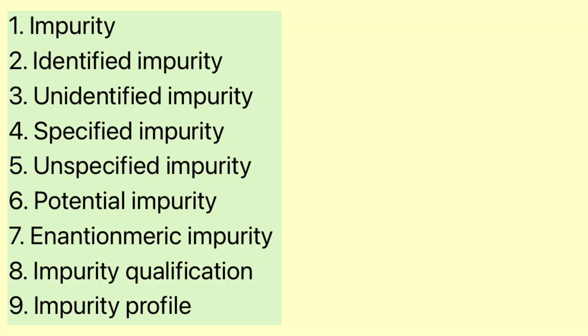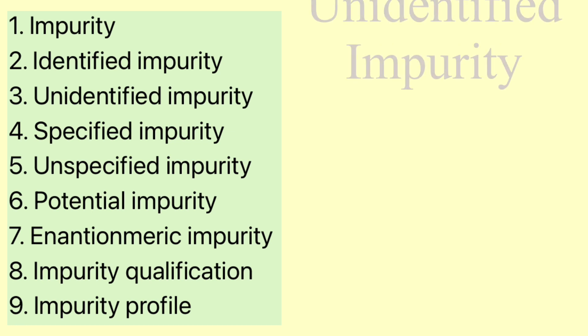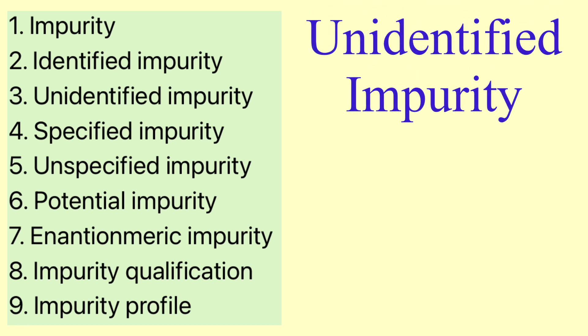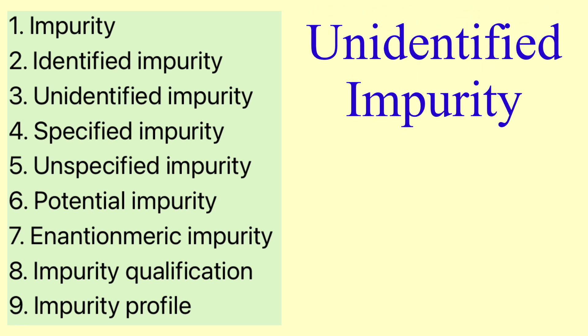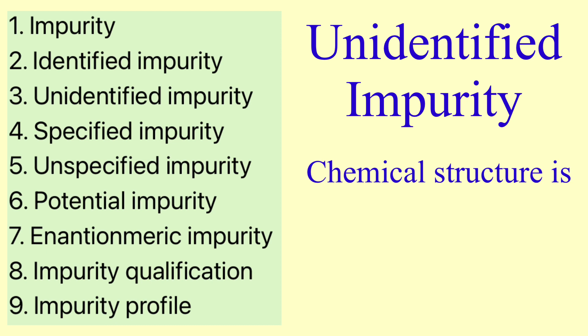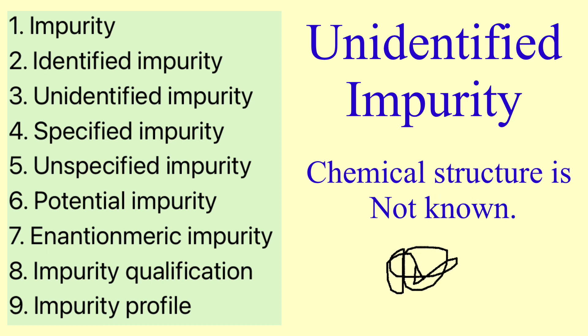Next is unidentified impurity. These are impurities for which the chemical structure is not known. In that case, we call such impurities unidentified impurities.